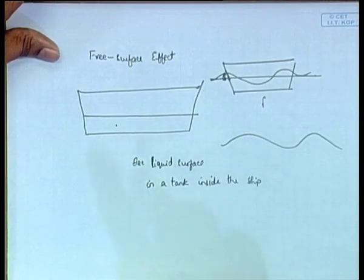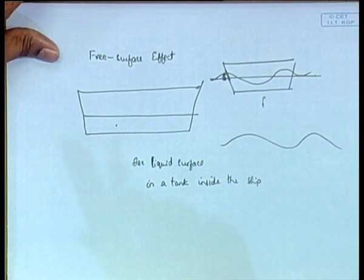If the tank is completely filled with the fluid, there would be no movement of the free surface — it will be fixed, just like a solid. That liquid becomes just like a solid and moves with the ship only, with no separate motion of its own. But if it is not fully filled, this free surface will move and has an effect of its own on the ship's stability. That is what we are going to look at next — that is what we mean by free surface effect.